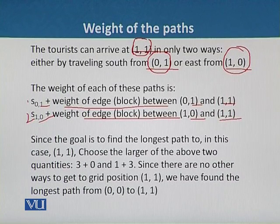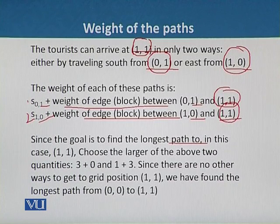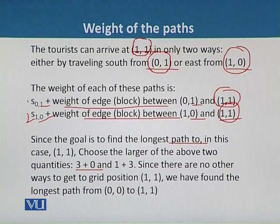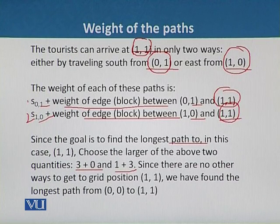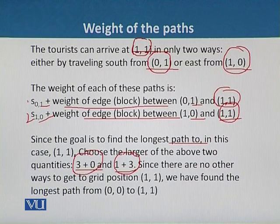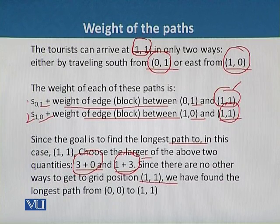Since the goal is to find the longest path, we will choose the larger of these quantities. We have to calculate S[i][j] and find the largest value S[N][M]. In this case, we consider the maximum: 1 plus 3 equals 4, compared to 3 plus 0 which is 3. So we take 4 as the value of S[1][1], since we must find the longest path from (0,0) to (1,1).